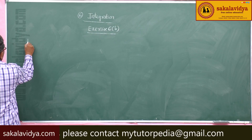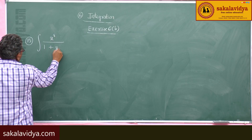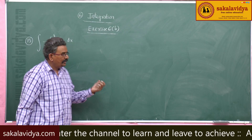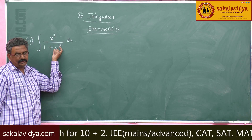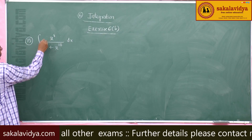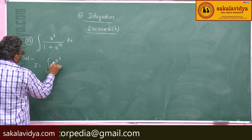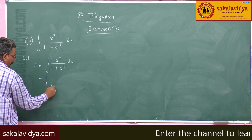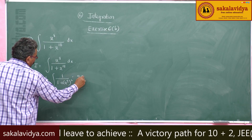Next, 15th problem. Evaluate integral of x to the power of 8 by 1 plus x to the power of 18 dx. This is also similar to the 14th one. x to the power of 8 is part of the derivative of x to the power of 9. x to the power of 18 can be written as x to the power of 9 whole square. The derivative of x to the power of 9 is 9x to the power of 8, so multiply and divide by 9. The integral i equals 1 by 9 integral of 1 by 1 plus x to the power of 9 whole square, into 9x to the power of 8 dx.